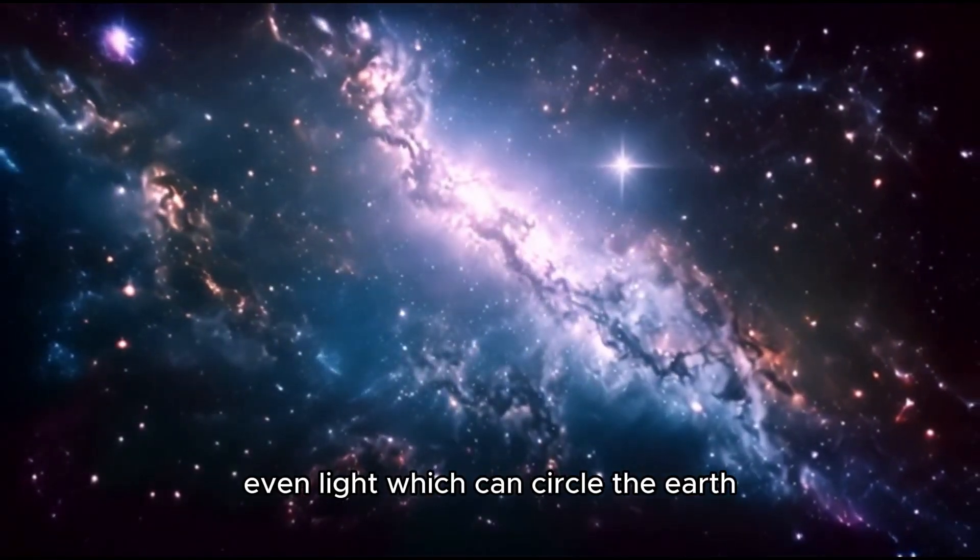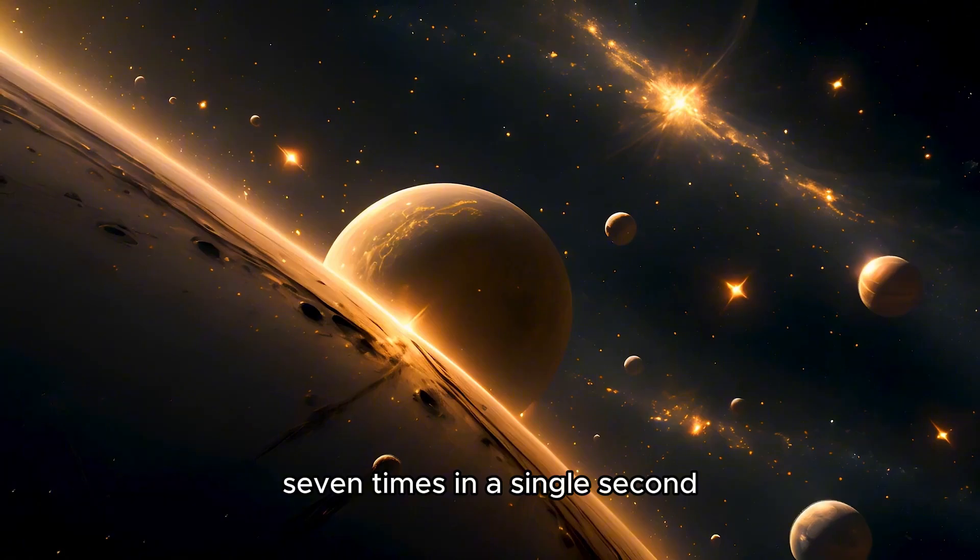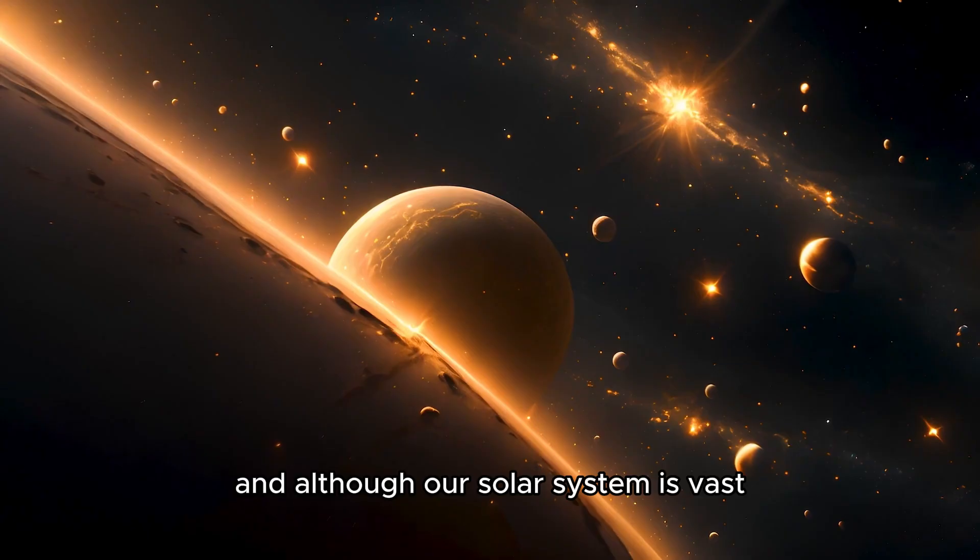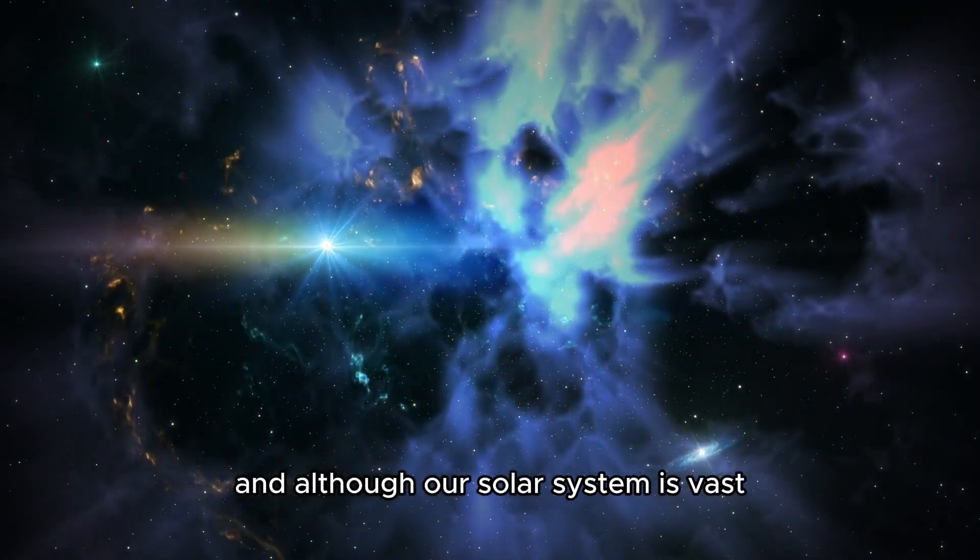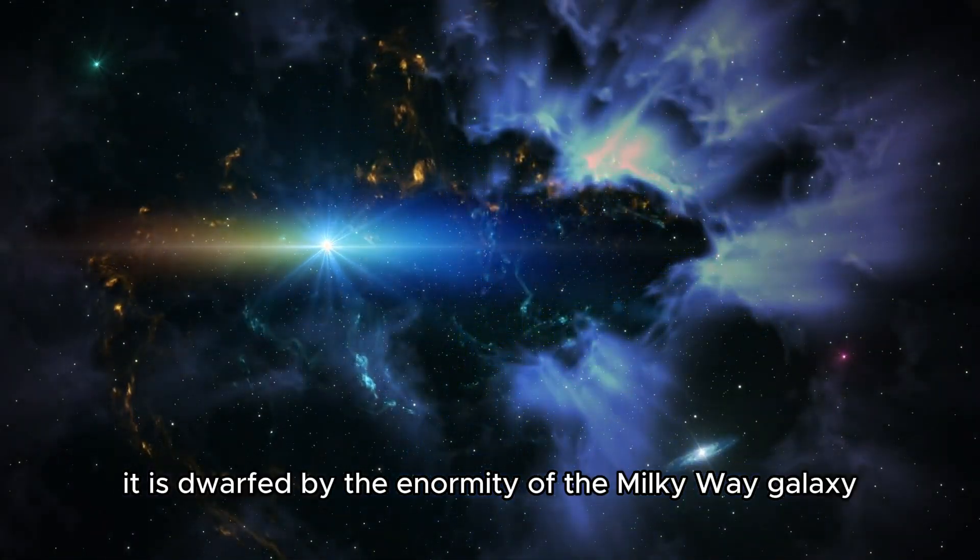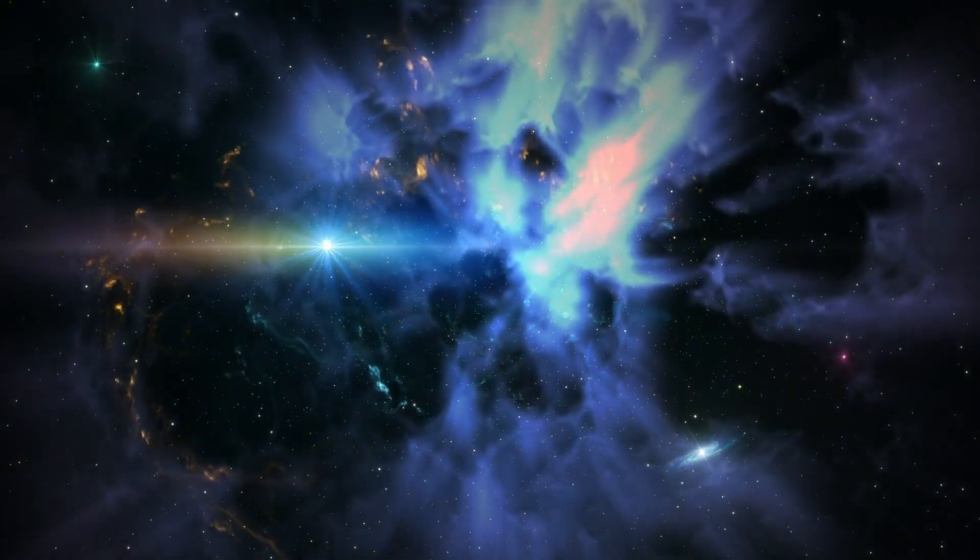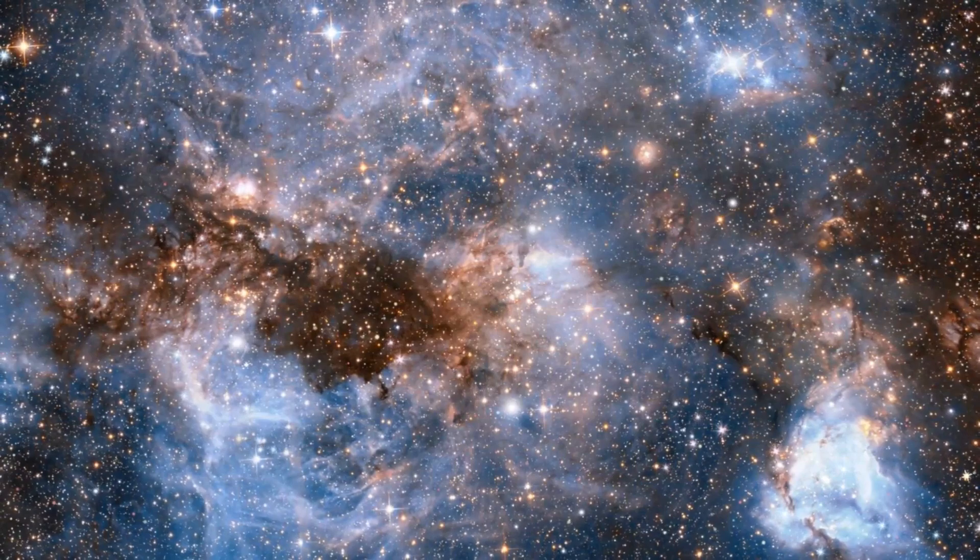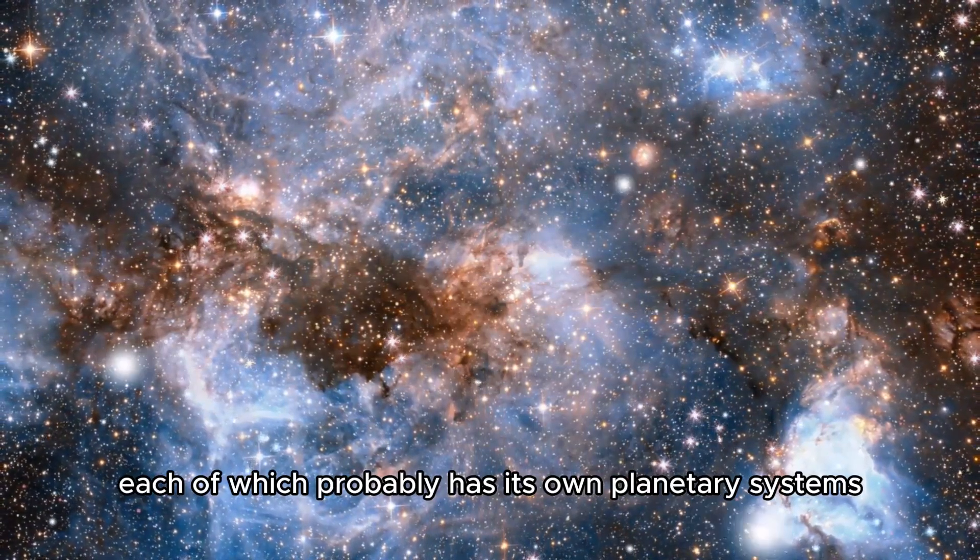Even light, which can circle the Earth 7 times in a single second, seems relatively slow compared to the vastness of our solar system. And although our solar system is vast, it is dwarfed by the enormity of the Milky Way galaxy. This galaxy contains approximately 300 billion stars, each of which probably has its own planetary systems.